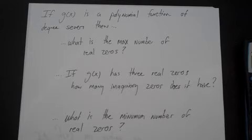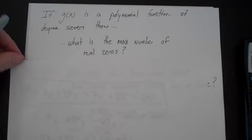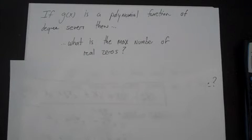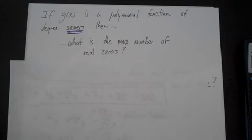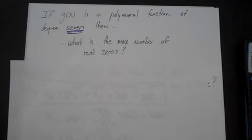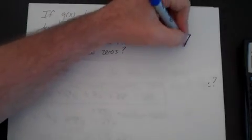You can also use this theorem to answer some conceptual questions. If g(x) is a polynomial function of degree 7, what is the maximum number of real zeros? The total number of real plus imaginary zeros equals 7. To maximize real zeros, you minimize imaginary zeros. It's entirely possible to have no imaginary zeros, so the maximum number of real zeros is 7.